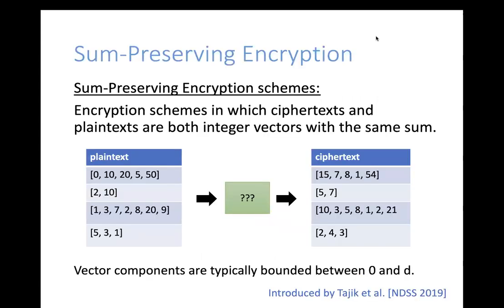The problem of sum-preserving encryption was first introduced by Tajik et al. in 2019. The idea is you want to encrypt vectors so that they have the same sum. You start with a vector of integers and encrypt it also as a vector of integers, but with the same sum as the original. In addition to preserving the sum, we'll also typically have a bound on the components, so each point in the vector is bounded between 0 and a component bound D.